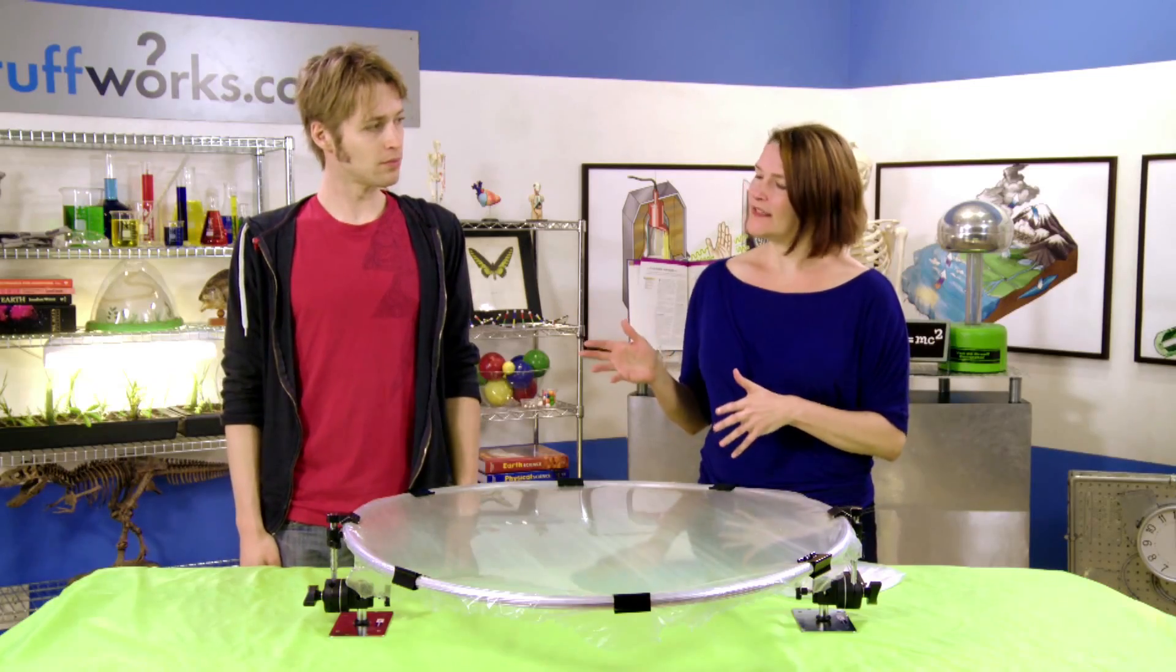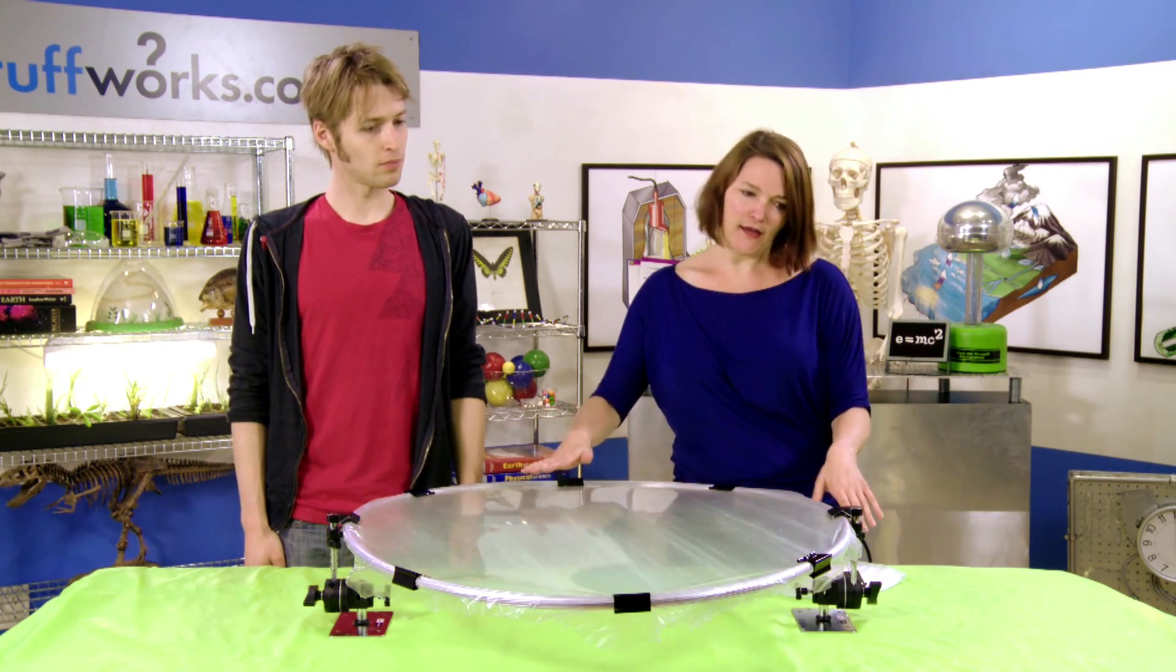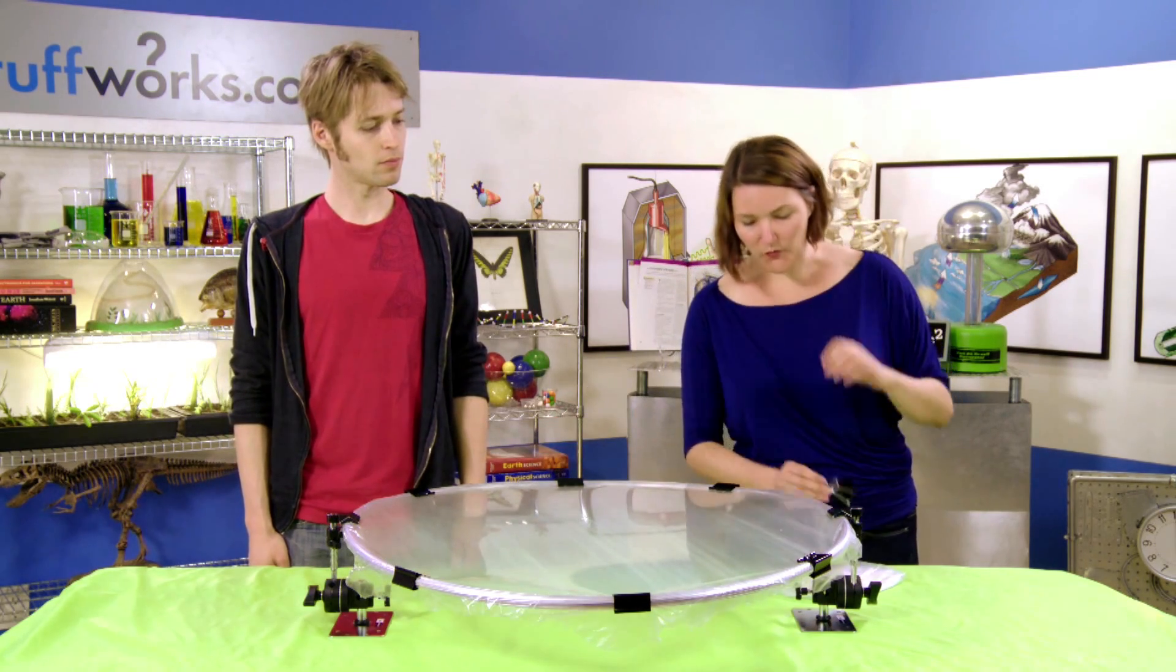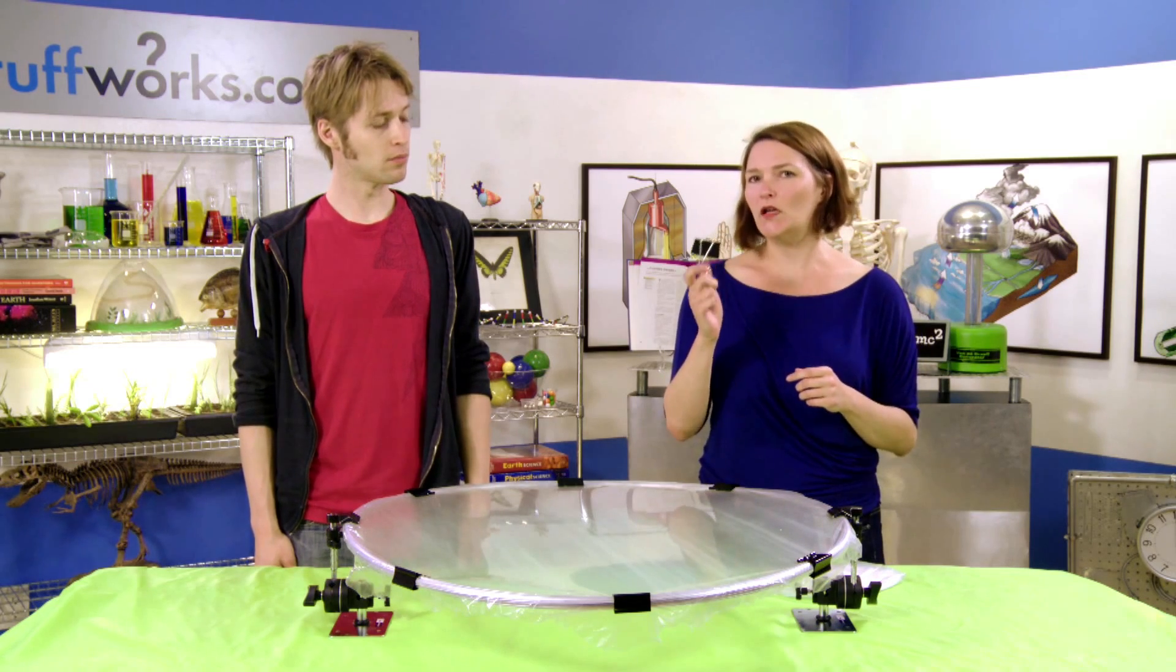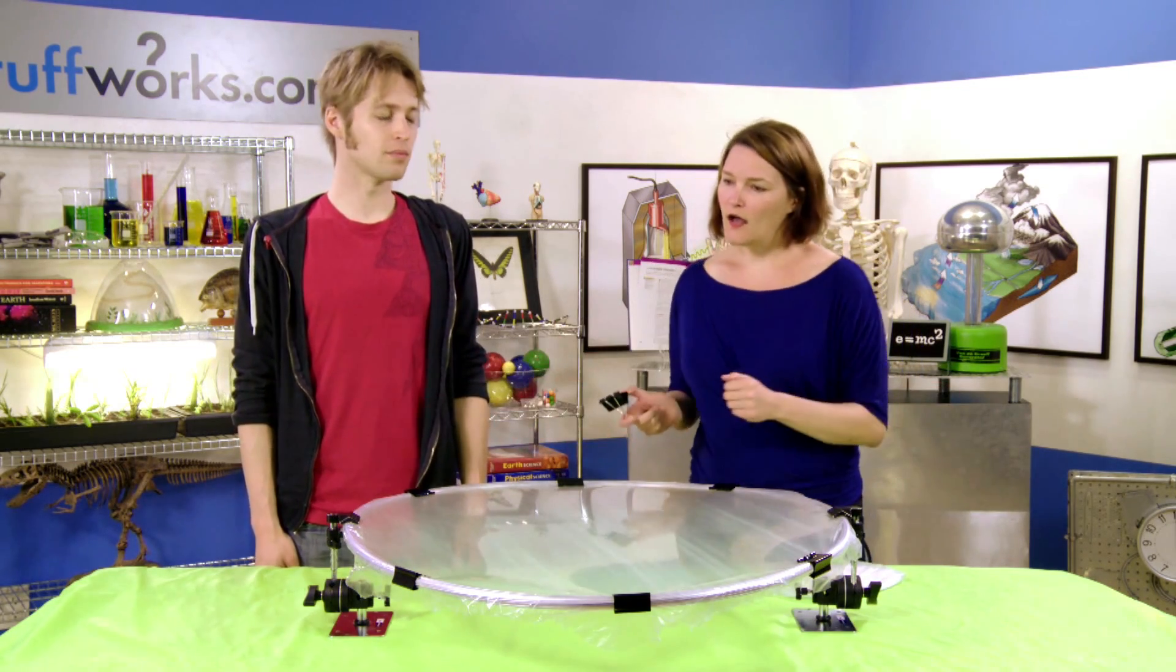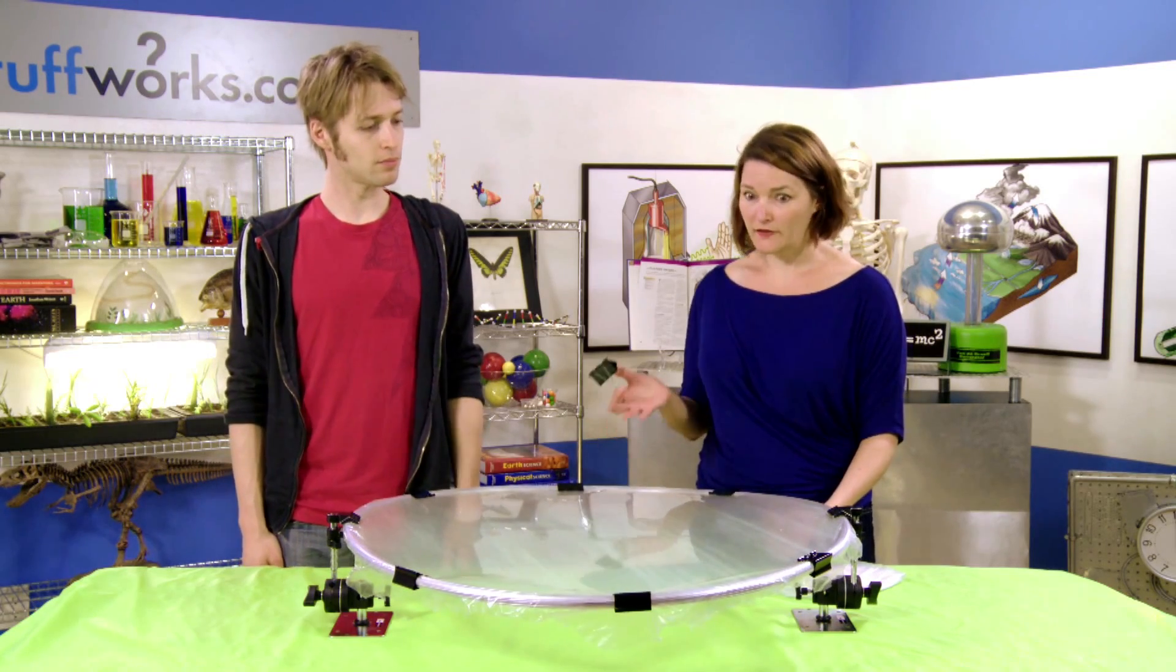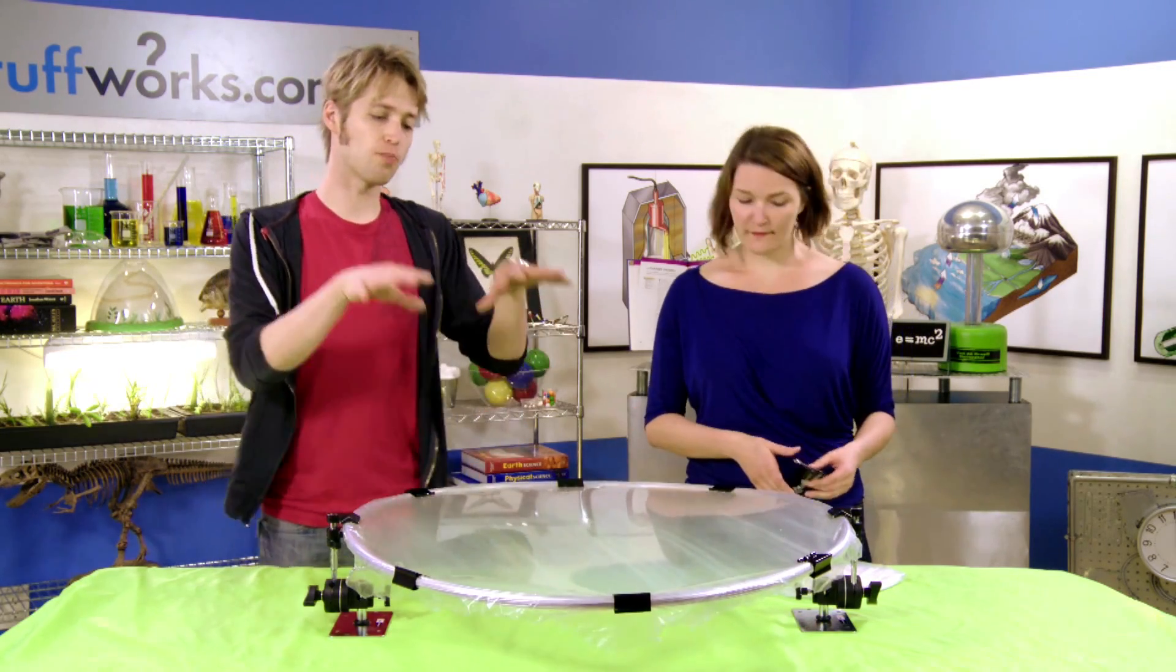And we are going to illustrate that tricky theory today using this. This is going to be our space-time fabric, and it's really easy to put together. In fact, we just used some binder clips that we got from an office supply store, a hula hoop you might even have at home, and then a little bit of plastic, which is a really inexpensive, easy way to illustrate this.